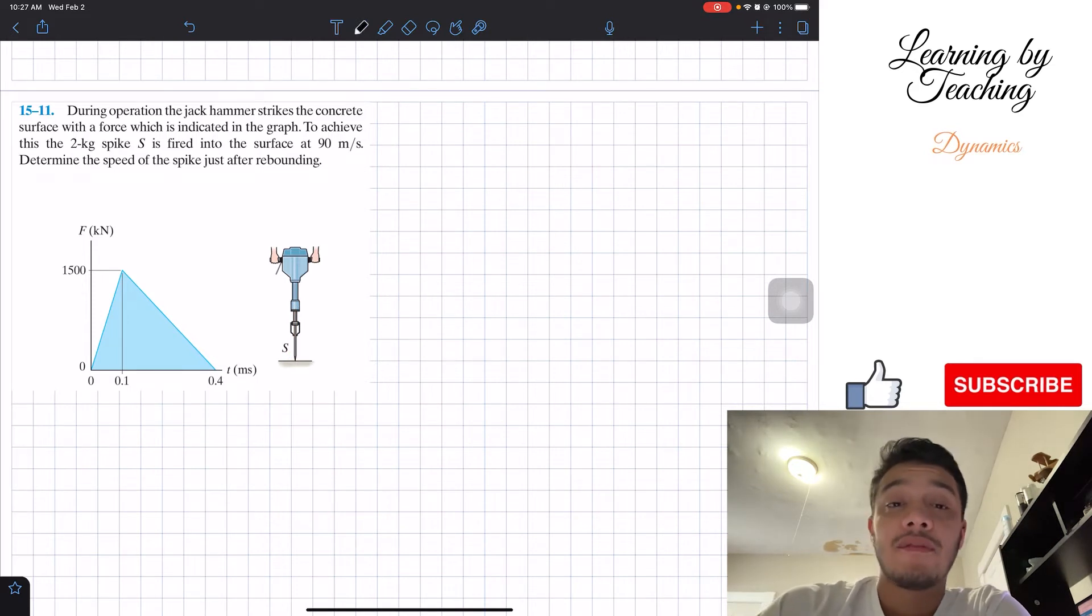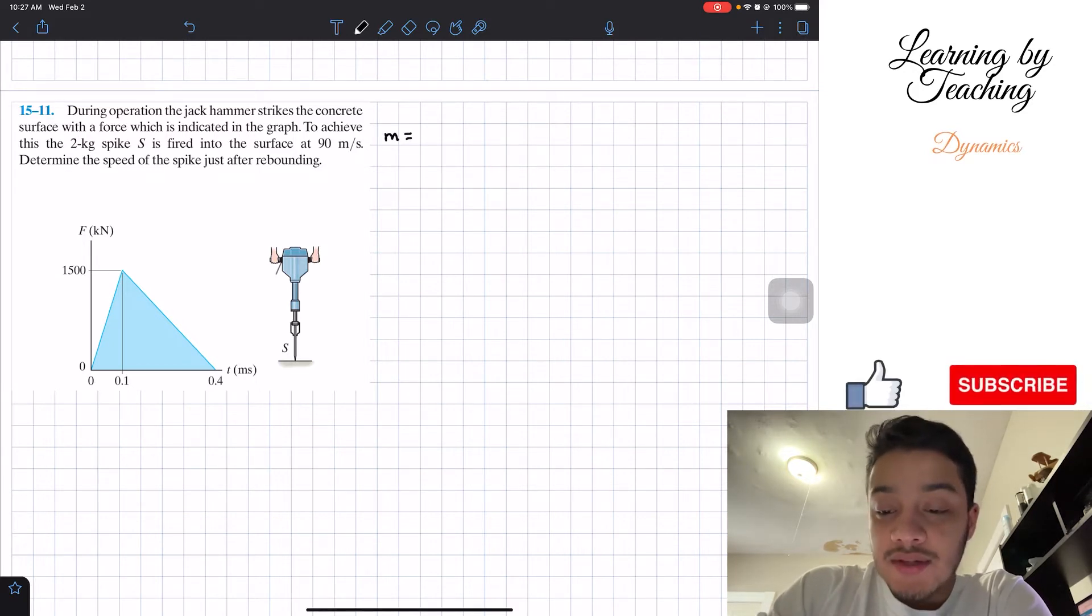So in order to solve the problem, first of all, let's write out our givens. So for givens, I'm given the mass of this spike S to be 2 kilograms.